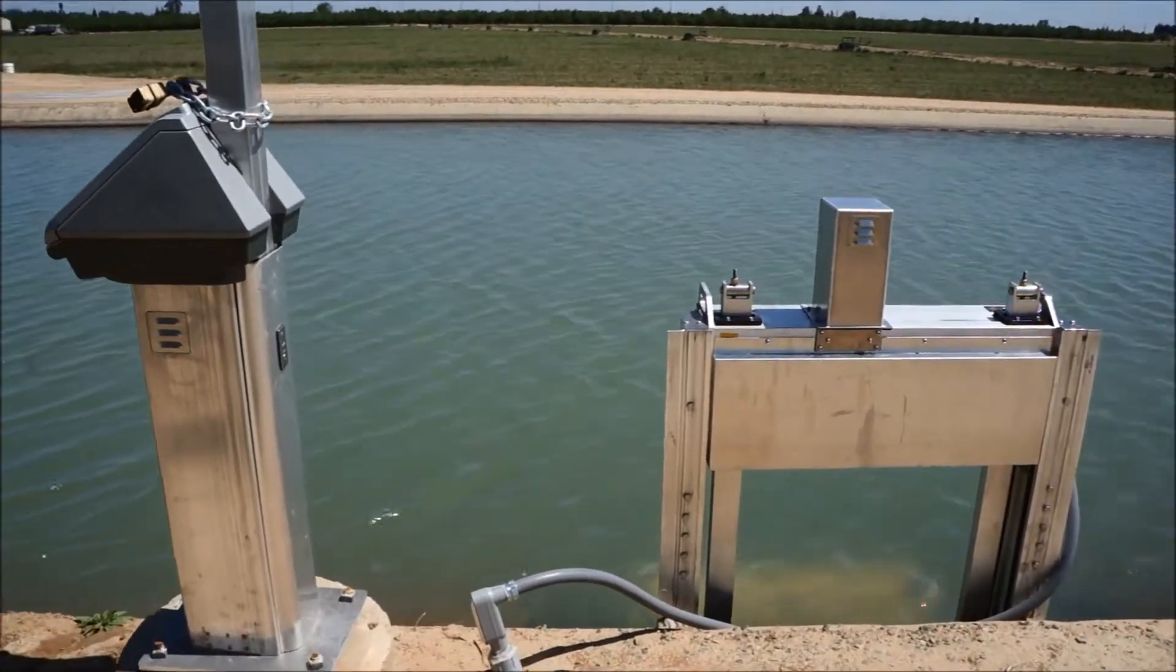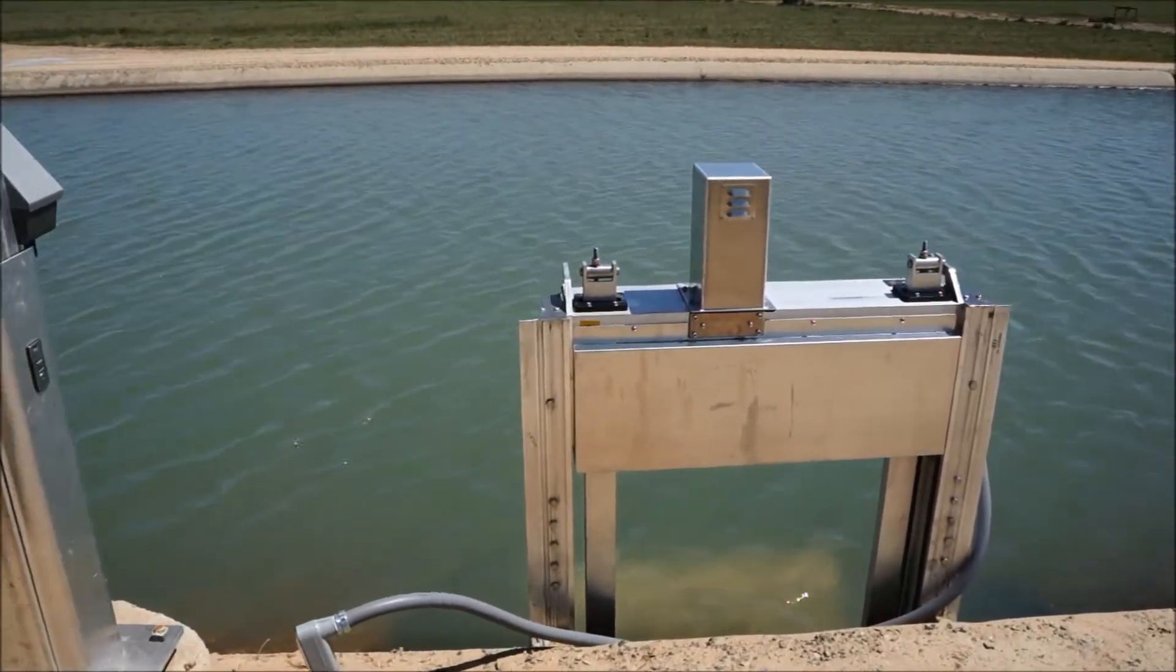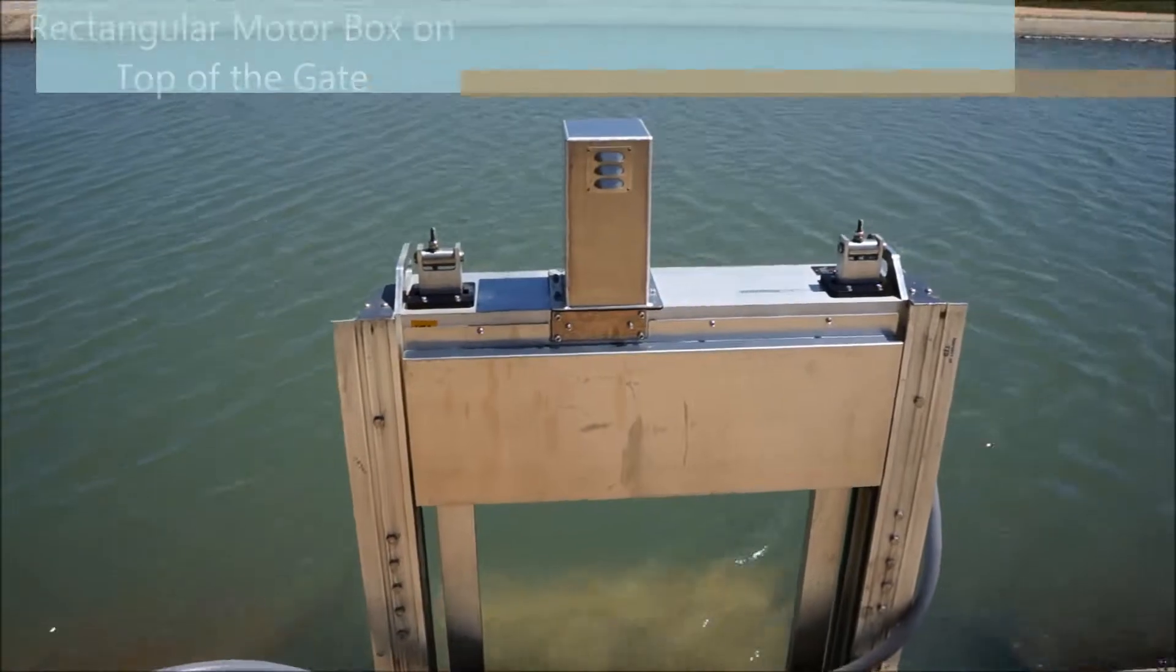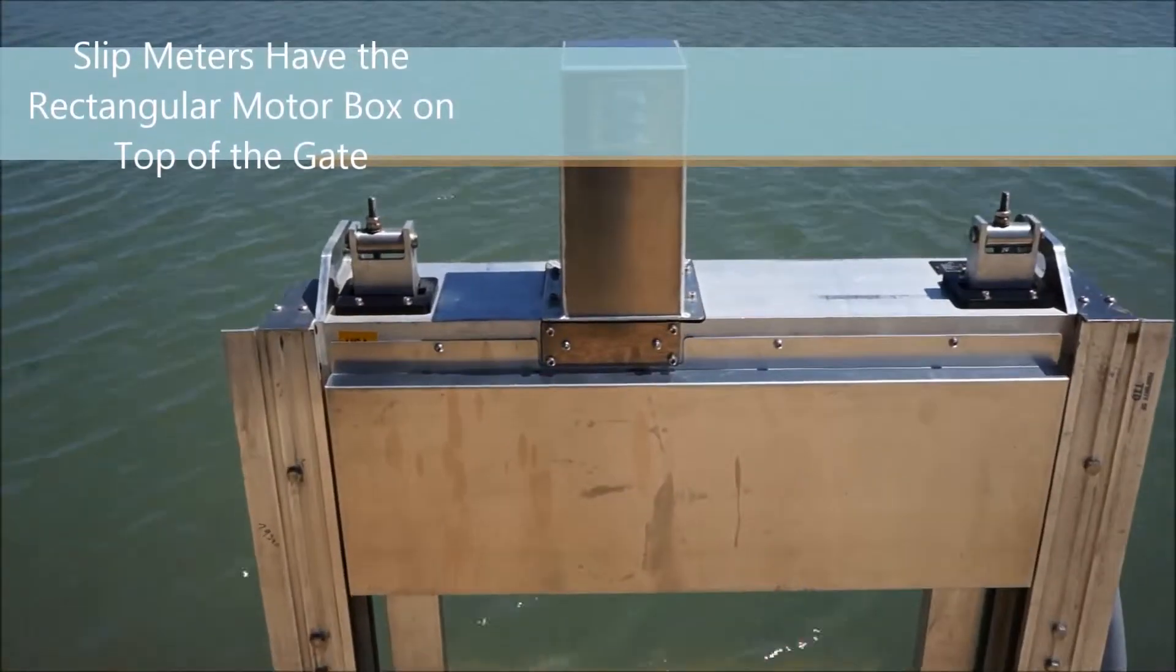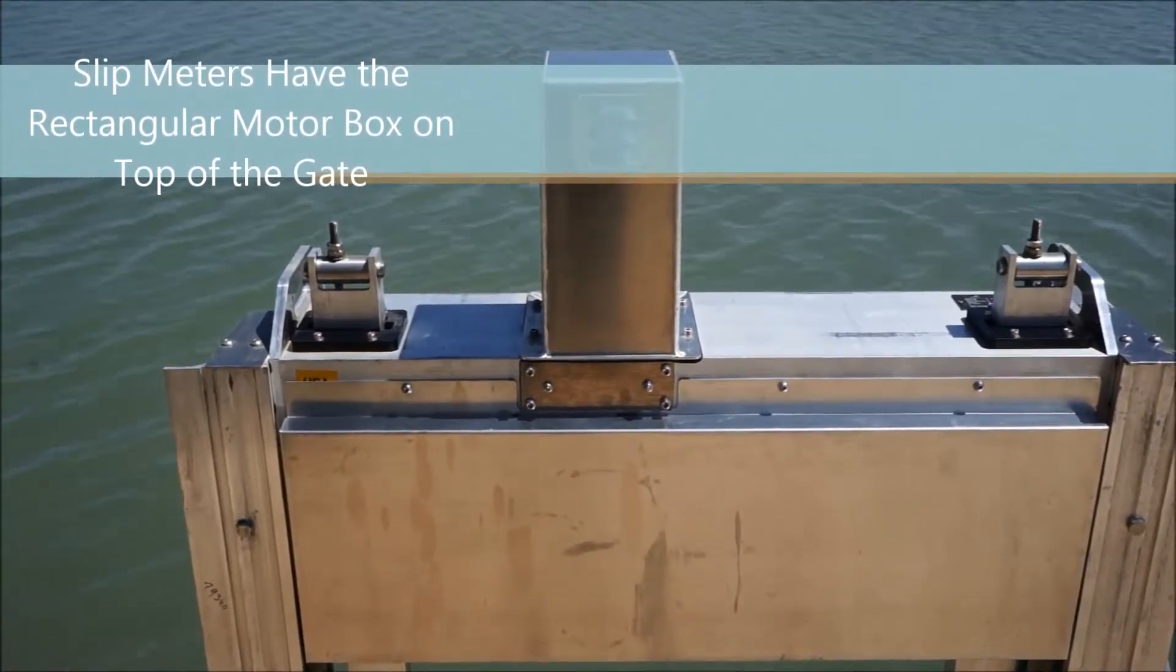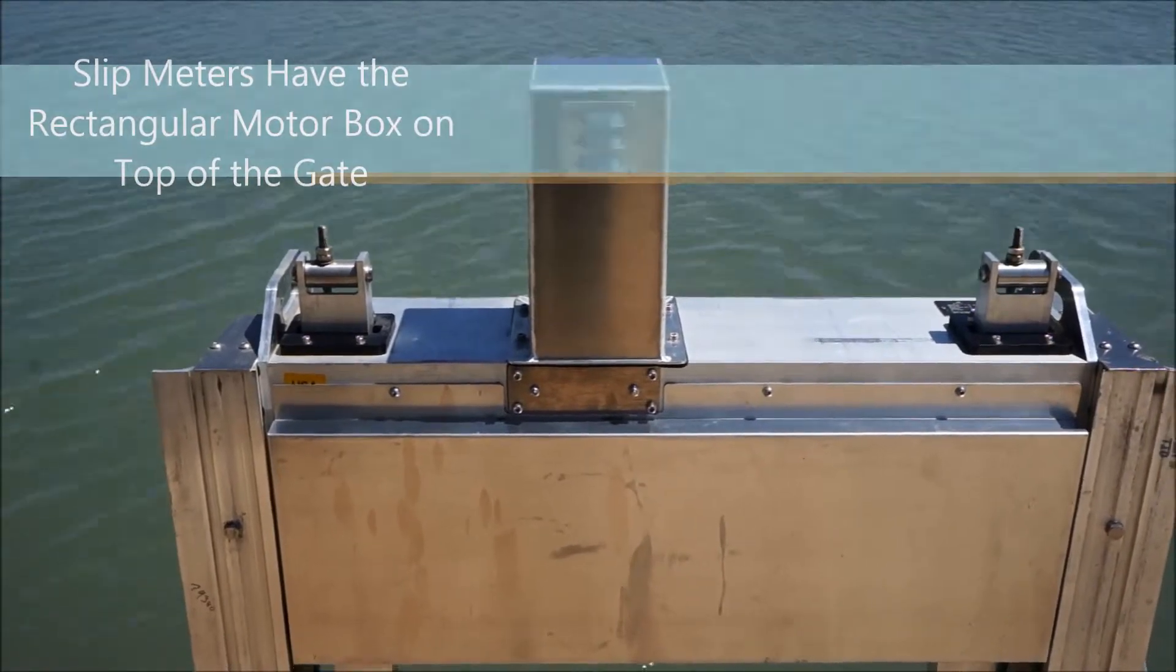As we approach the new Rubicon gate, you'll know it's a slip meter or an automatic gate by the center motor located on the gate, and the two stems that rise and lower to adjust the gate position and adjust for your flow.